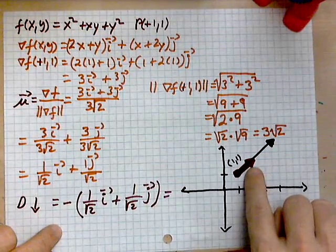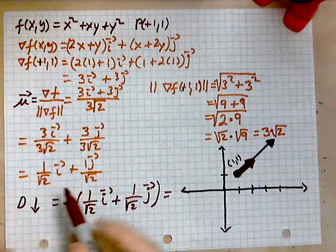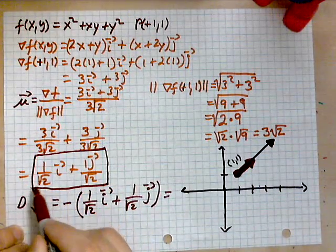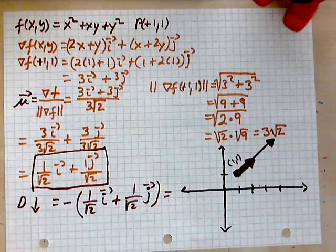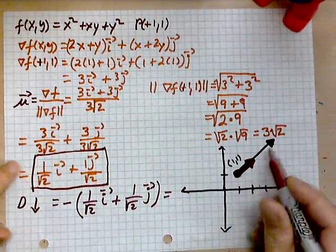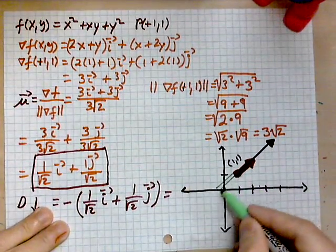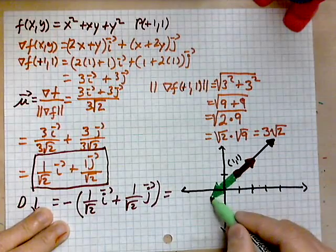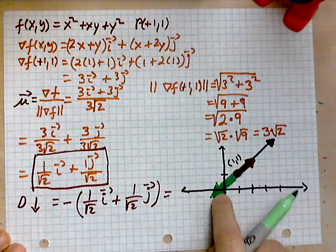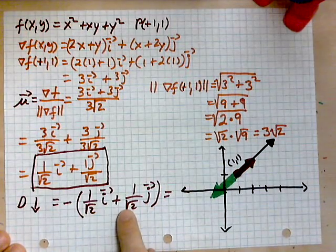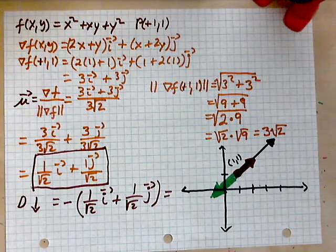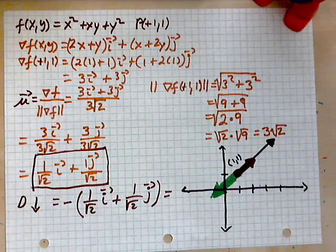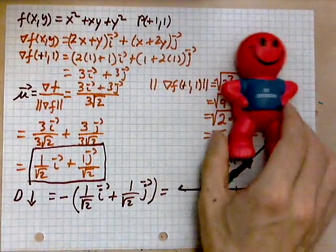This unit vector is the direction of most rapid increase. The direction of most rapid decrease is this same vector turned to point the other way — the negative direction. That is the entire procedure. It's quite elaborate but still fairly mechanical, so repeat it a few times. Thank you for watching, keep smiling, and stay persistent.